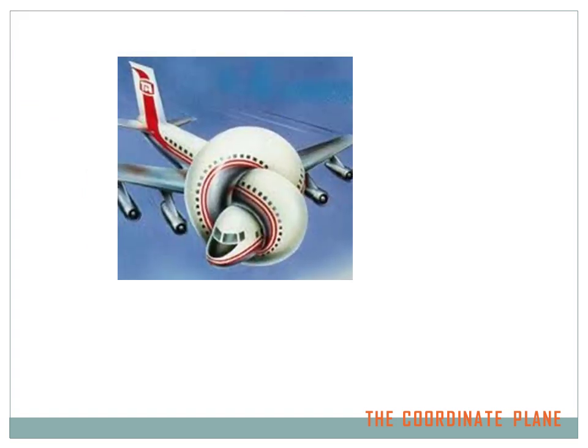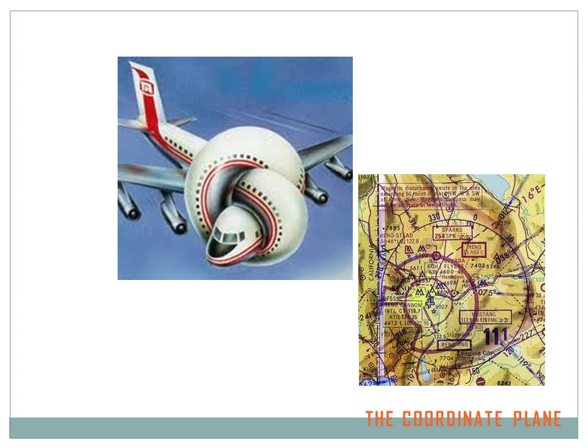The coordinate plane — what in the world is that? Is it the opposite of an uncoordinated plane? Well, no, I don't think so. But an airplane needs to know where it is. It has a map and some navigation equipment to show it where it is, relative to cities and mountains and its destination and where it's coming from. And a coordinate plane is an awful lot like a map.